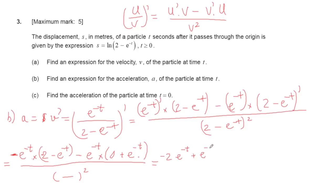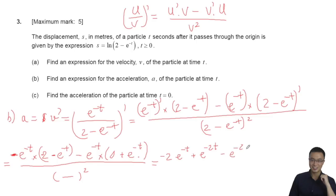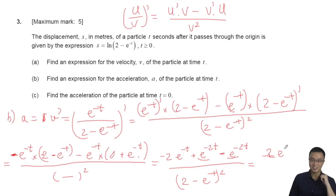Adding the remaining term: plus e^(-2t) (since minus outside and minus inside gives plus). The e^(-2t) terms cancel each other. After simplification, the final answer for part b is: acceleration = minus 2e^(-t) divided by (2 - e^(-t)) squared.